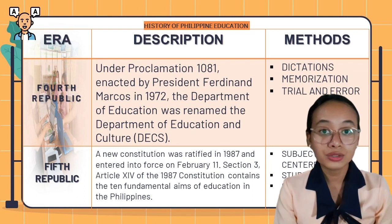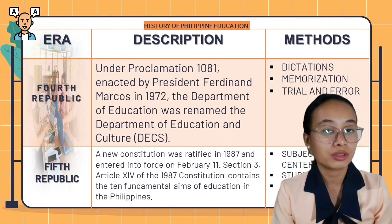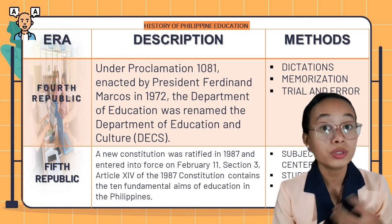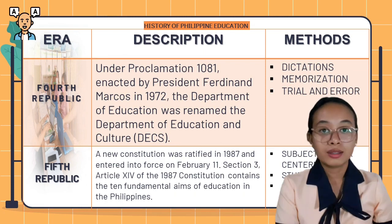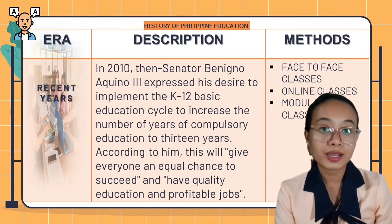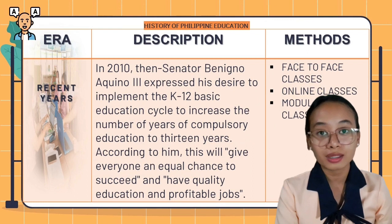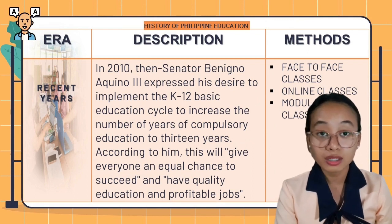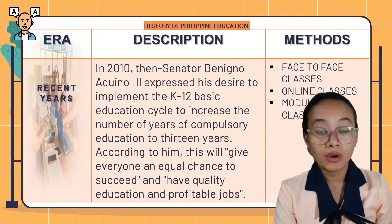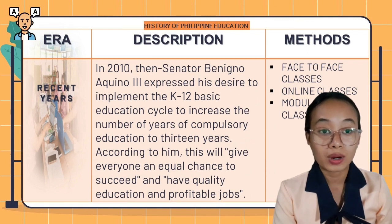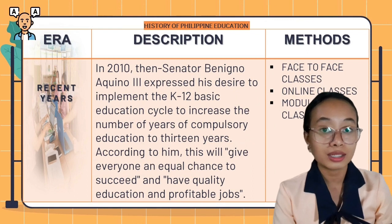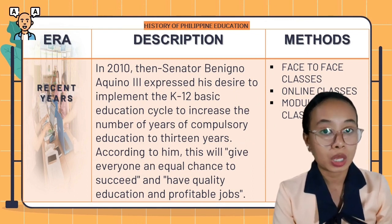Additionally, Section 2 of Article 14 of the 1987 constitution made all elementary schools compulsory for all children. In recent years, in 2010, then-Senator Benigno Aquino III expressed his desire to implement the K-12 basic education cycle to increase the number of years of compulsory education to 13 years. According to him, this will give everyone an equal chance to succeed, have a quality education, and a profitable job in the future.